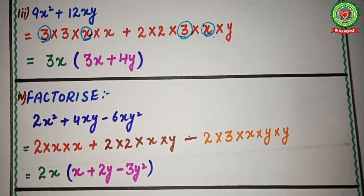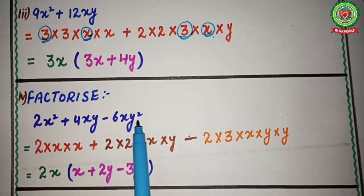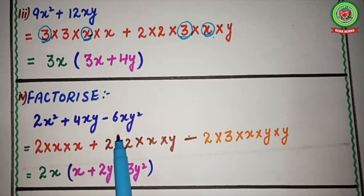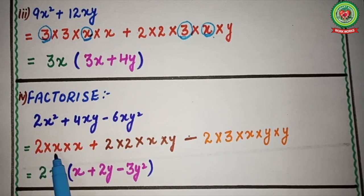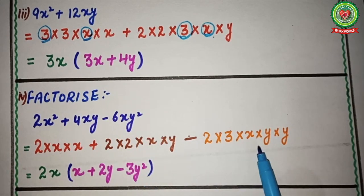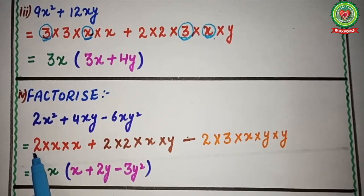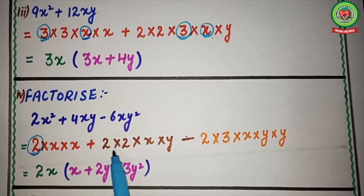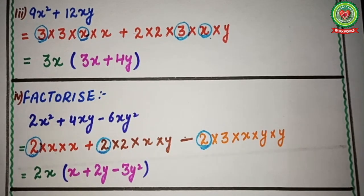Next example: factorize 2x² + 4xy − 6xy². This expression has three terms. We write the factors: factors of 2x² are 2 × x × x; factors of 4xy are 2 × 2 × x × y; factors of 6xy² are 2 × 3 × x × y × y. Now we choose the common factors from all three. The factor 2 is present in all three terms, so we circle it in each.